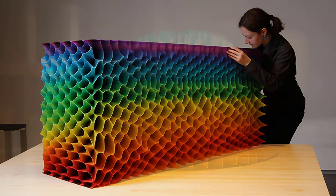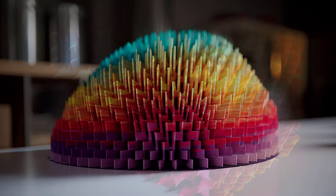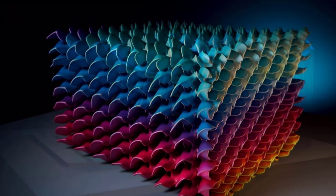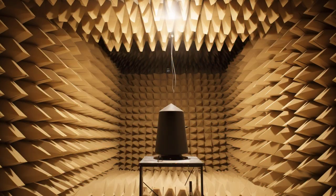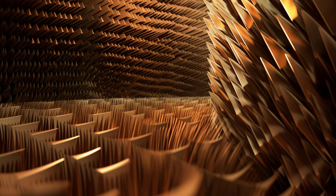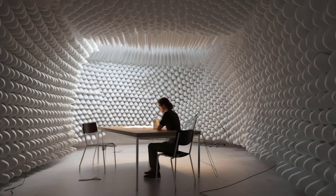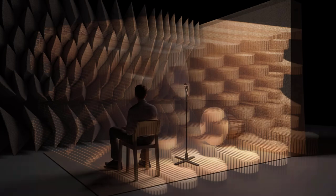Imagine dropping a stone into a pond. Normally, ripples would spread outward and be disturbed by anything in their path. Now, picture a hidden force guiding those ripples smoothly around an object so that no one can tell it's there. This is the basic idea behind acoustic cloaking.